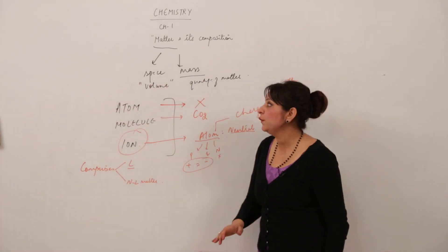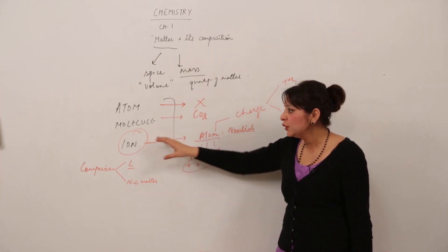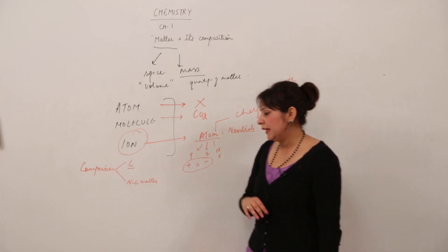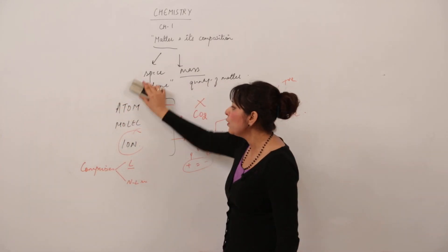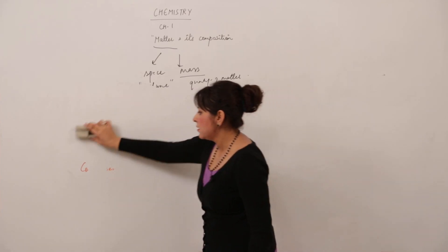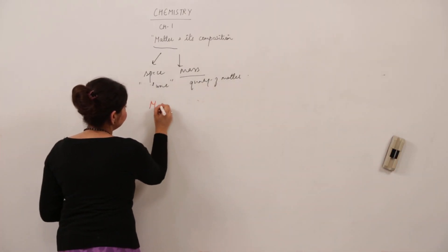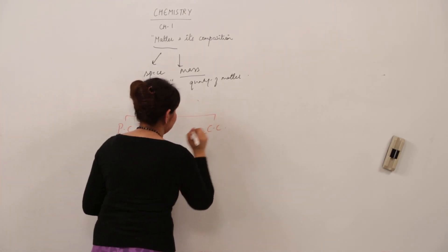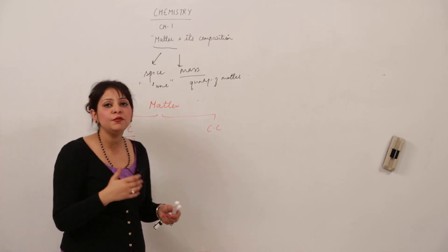So now we are familiar with what matter actually is and its composition. In the next step, we are going to classify matter. Matter is classified under two categories: physical classification and chemical classification. Physical classification refers to the different physical states in which matter can exist.